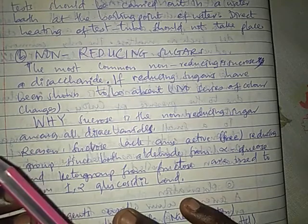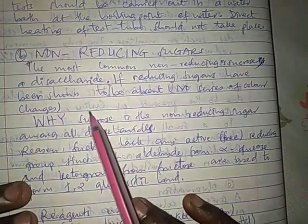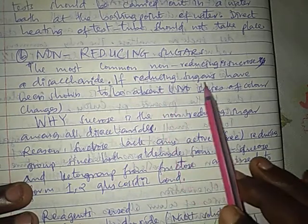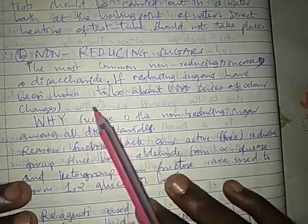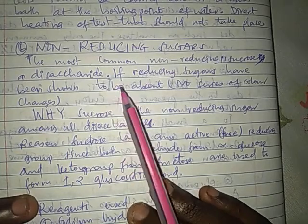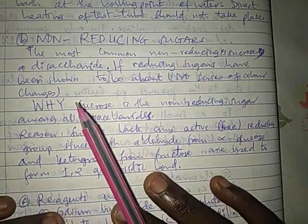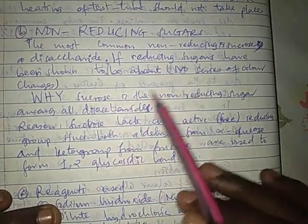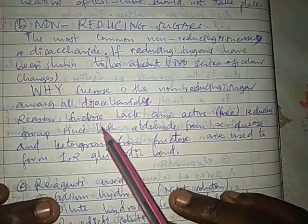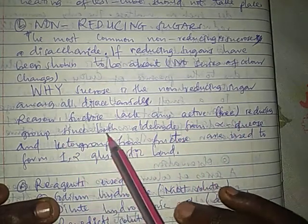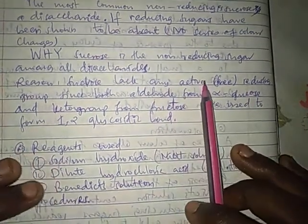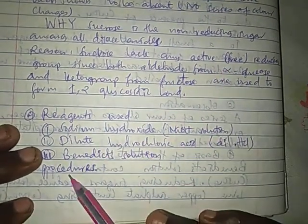Now let's look at the test for non-reducing sugar. The most common non-reducing sugar is sucrose, a disaccharide. If reducing sugar has been shown to be absent — no series of color changes — then we test for non-reducing sugar. Sucrose is a non-reducing sugar because it lacks any active or free reducing group, since both the aldehyde group from alpha-glucose and the keto group from fructose are used to form the 1,2-glycosidic bond.